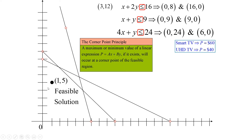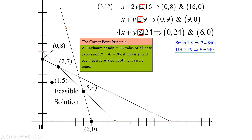Looking at our feasible region, there are four corner points. The first is (0, 8). This is why you want graph paper and a ruler — it's much easier to read coordinates directly than to solve systems of equations. The second corner point is (2, 7). The third is (5, 4). And the final corner point at the bottom is (6, 0). Those are the four corner points of the feasible region.